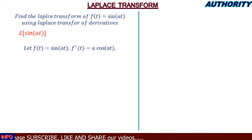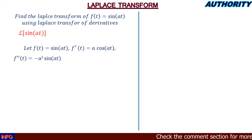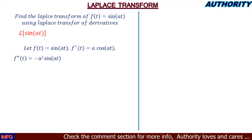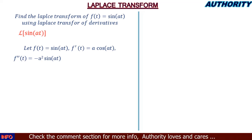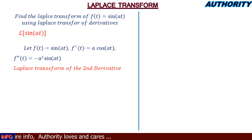Differentiating again for the second derivative, f''(t) gives us −a²·sin(at). So to summarize: f(t) = sin(at), f'(t) = a·cos(at), and f''(t) = −a²·sin(at). Now let's apply the Laplace transform of the second derivative.